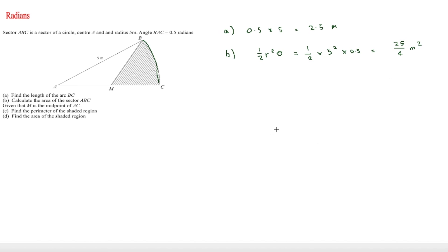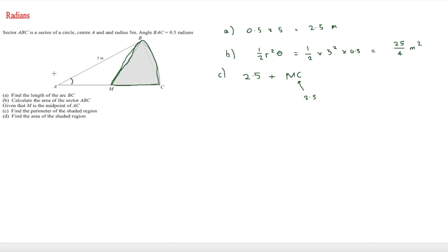For part c we're told that M is the midpoint of AC and asked to find the perimeter of the shaded region. We've already found the arc length of 2.5. Since the radius is 5 metres, AC is 5 metres, so MC — half of AC — is also 2.5 metres. We still need to find the remaining side length.